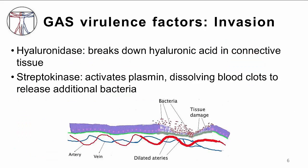Group A strep also has a number of enzymes that are thought to play a role in tissue invasion. Some of these enzymes, such as hyaluronidase and kinase, are common amongst other bacteria as well. For example, Staph aureus possesses a hyaluronidase and a staphylokinase. These enzymes help to break down connective tissue barriers, allowing the bacteria to enter our tissues and sometimes our bloodstreams.